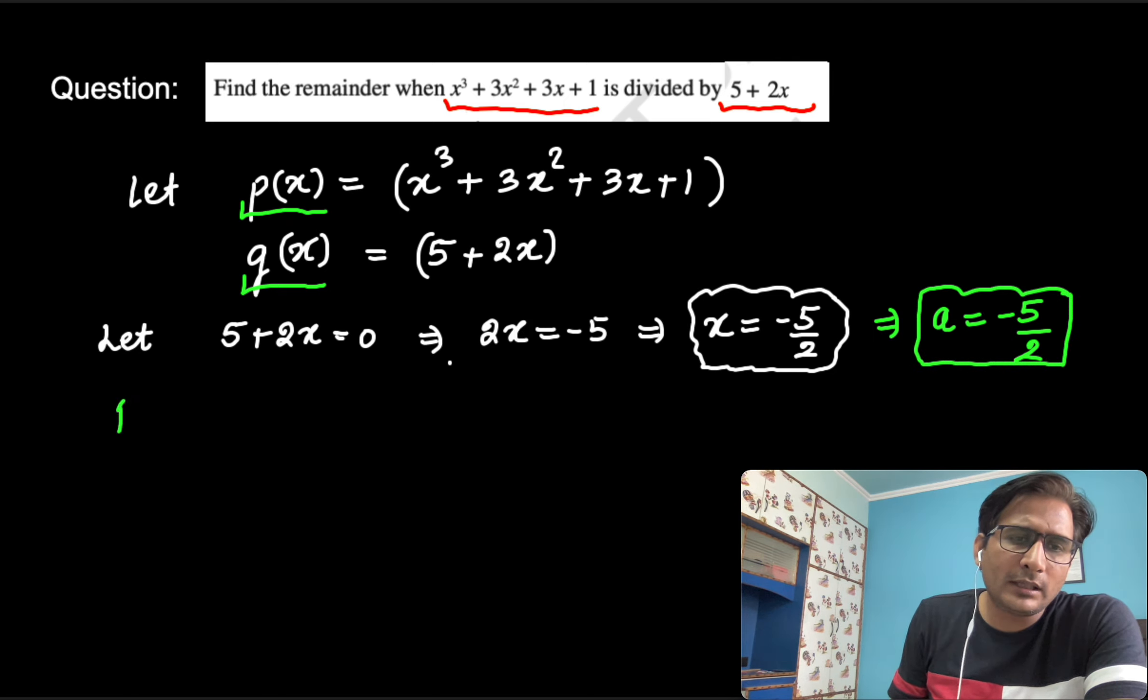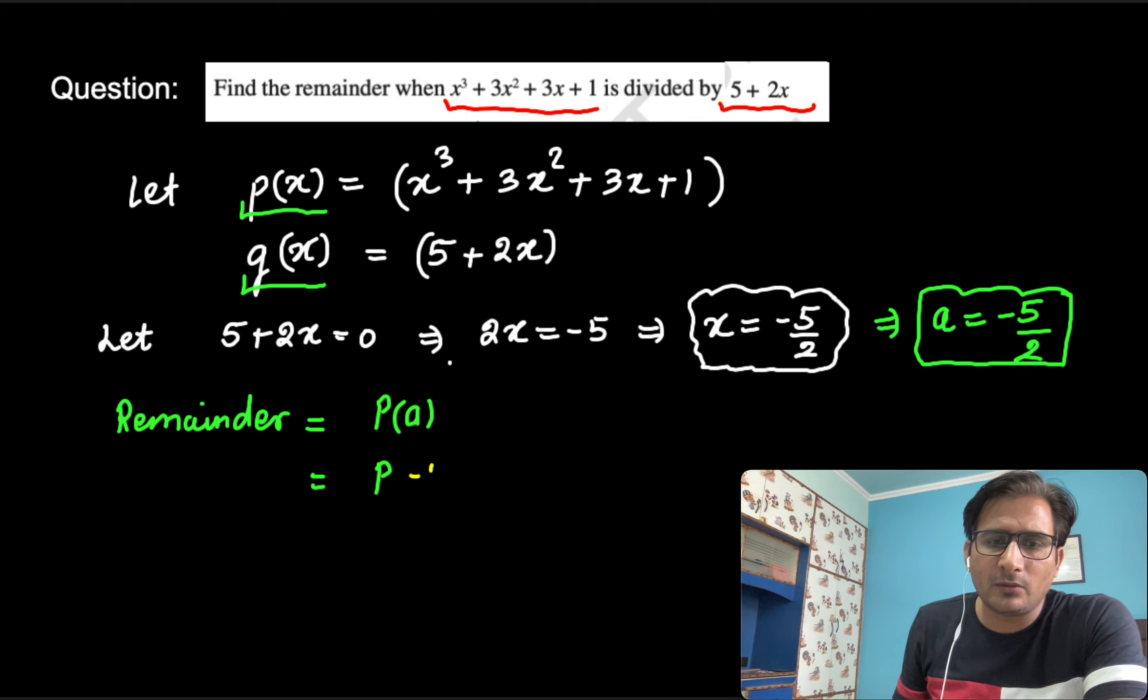Now, according to the remainder theorem, remainder is equal to p(a). Put the value of a, a is minus 5 by 2. At the place of a, put equal to minus 5 by 2.